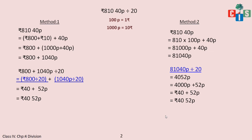In both methods you get the same answer but your path is different. In the first method, we divide rupees by 20 and paisa by 20 separately. In the second method, we convert rupees into paisa, then divide, then convert the answer back to rupees and paisa. Students, I find that the second method is more convenient and in our sums we will mostly use the second method. Let's move on.